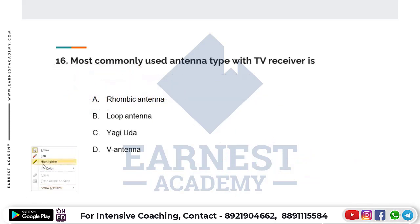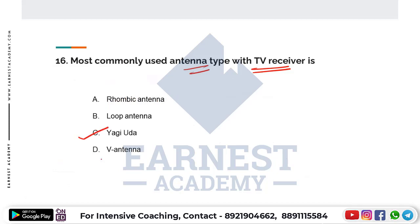The most commonly used antenna type with a TV receiver is the Yagi-Uda antenna. Television reception uses the Yagi antenna, while television transmission uses a turnstile antenna.